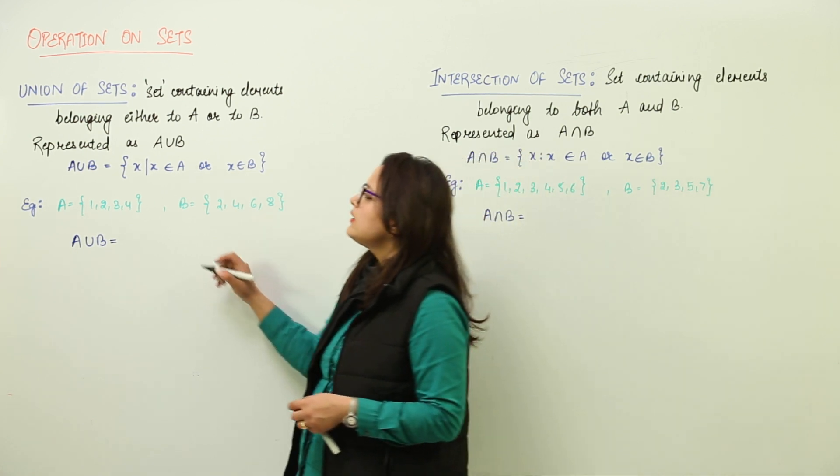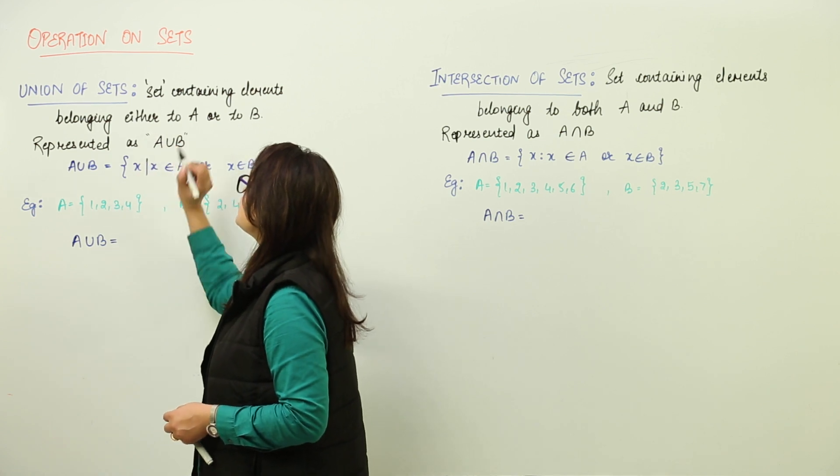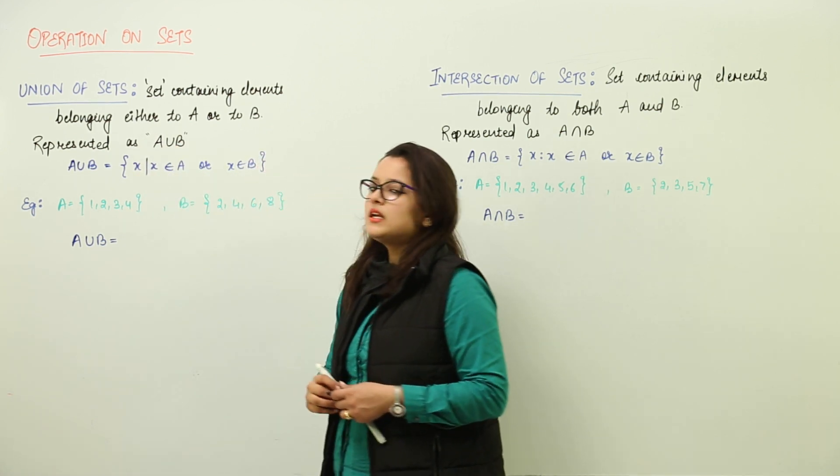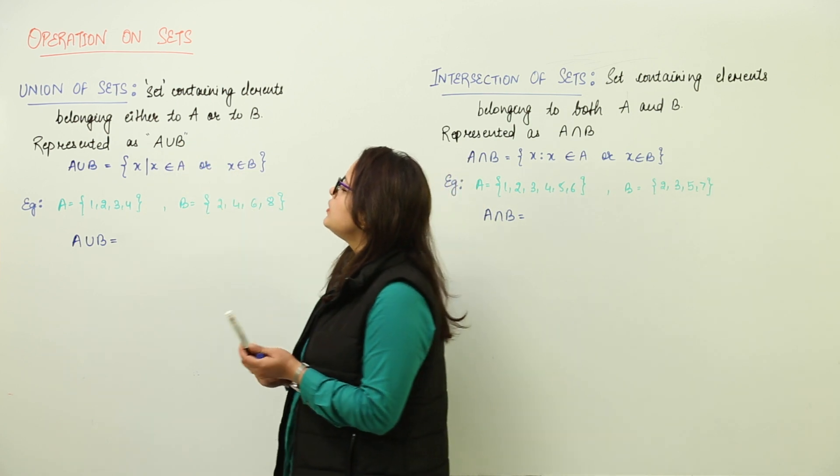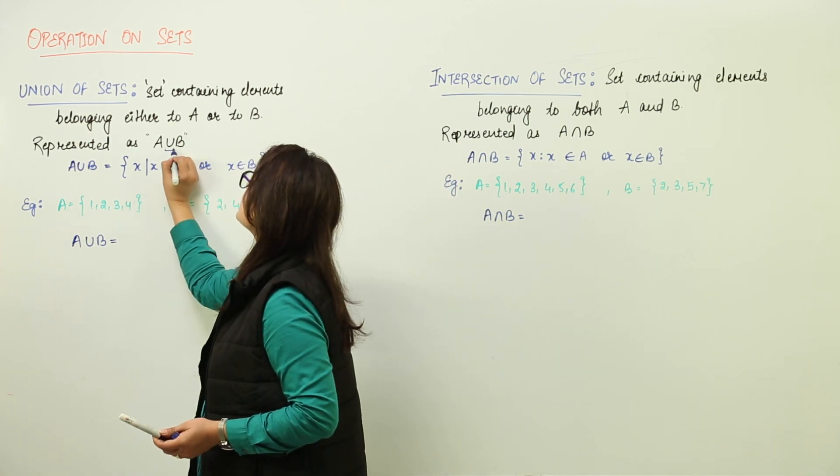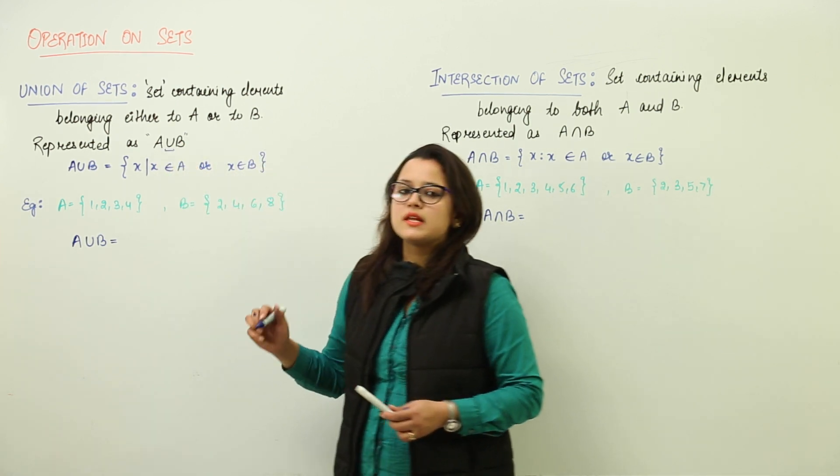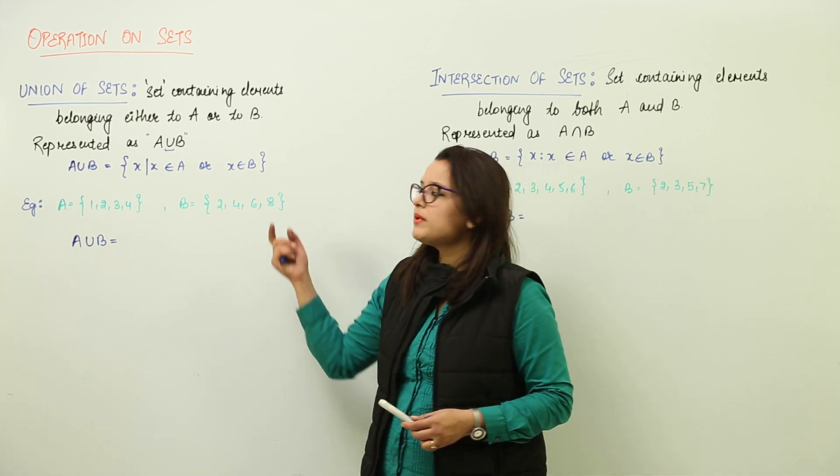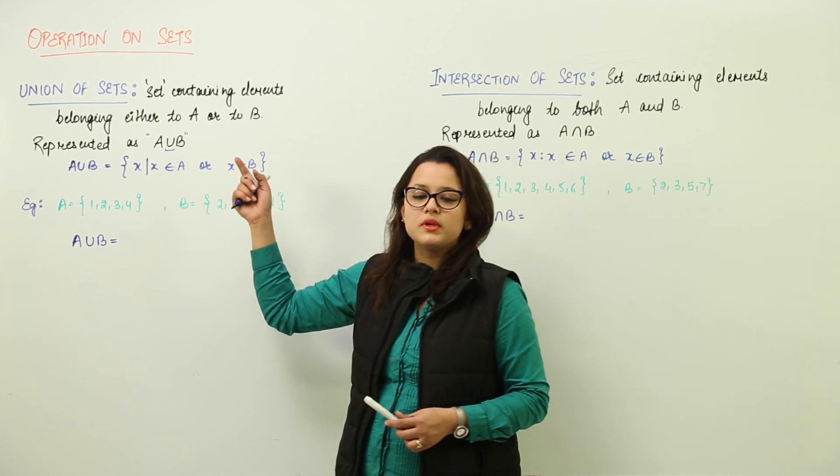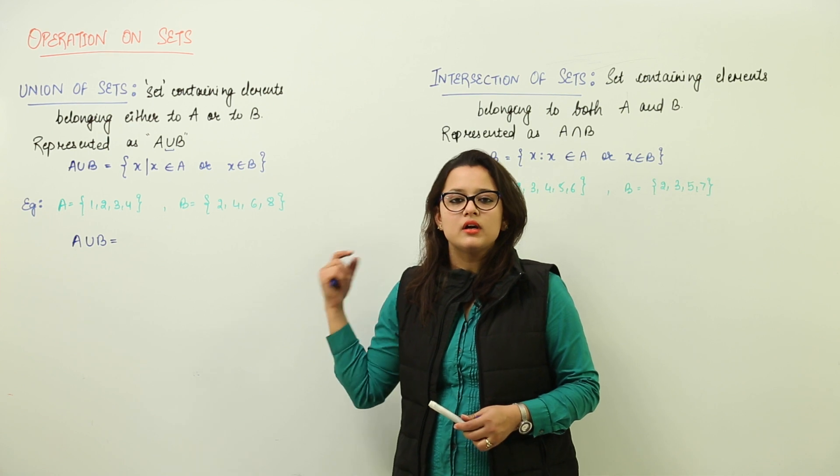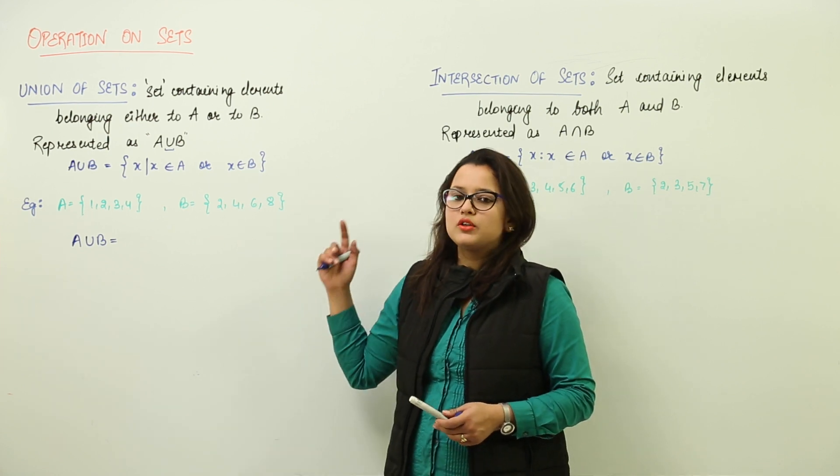It is always represented as A union B, using this sign of union. This means the elements which will be present in set A union B are going to be either part of A or part of B.